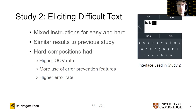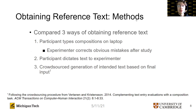Study two used similar instructions as in study one, but this time they were mixed together instead of in distinct conditions. We found similar results to the previous study. Additionally, the hard compositions in this study had a higher out-of-vocabulary rate, a higher error rate, and more use of the error prevention features than the easy compositions. The error prevention features in this study consisted of the same lock letter feature as the previous study, but also word suggestion slots, one of which contained the literal characters that the user had typed, essentially locking all characters. More details are provided in our paper.